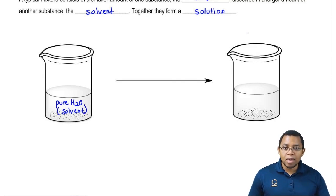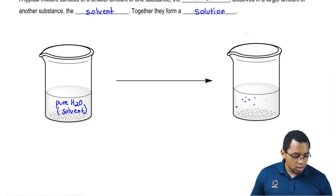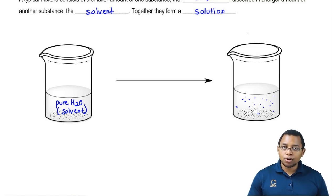If you take some table salt or maybe even some sugar and you just sprinkle some in there, it's going to dissolve. You're going to have little specks of sugar or salt mixed in there. Those little specks of sugar or salt will represent your solute.